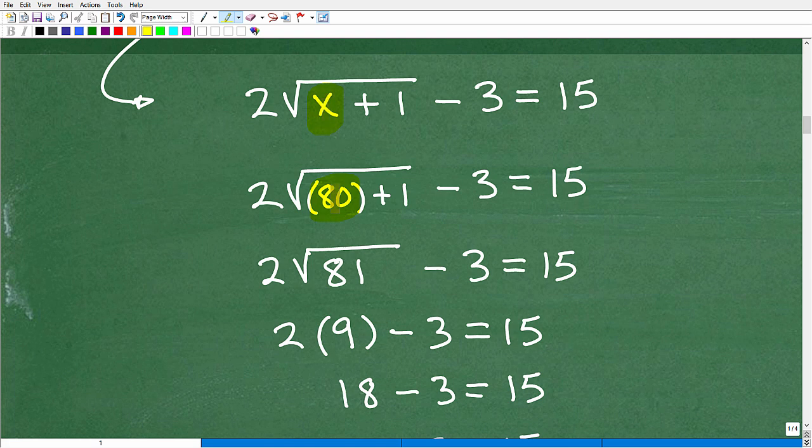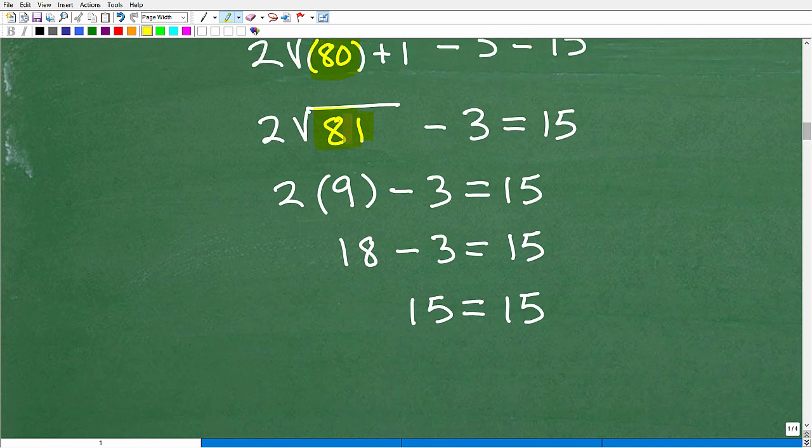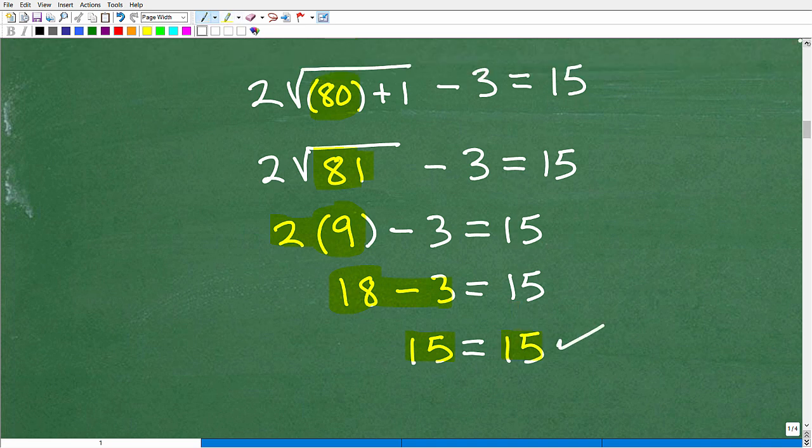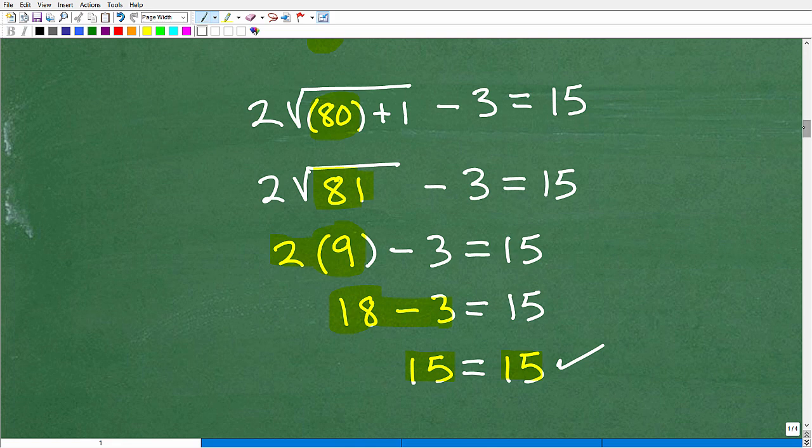So I'm going to replace this x with 80, and then I'm just going to do the math here. So 80 plus 1 is 81, so 2 times the square root of 81 minus 3, is that equal to 15? So the square root of 81, of course, is positive and negative 9. We'll just use the positive version here. So 2 times 9 is 18. 18 minus 3 is 15, so 15 is equal to 15. So it checks. So that is a good solution.